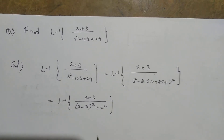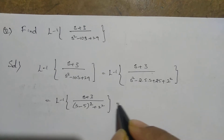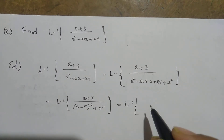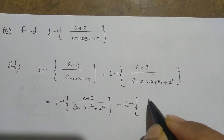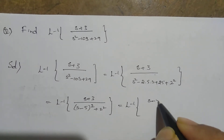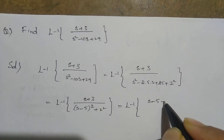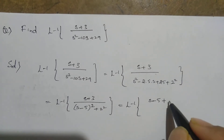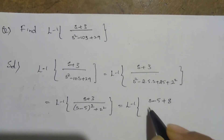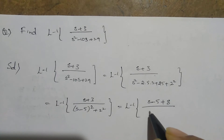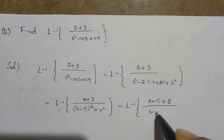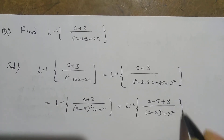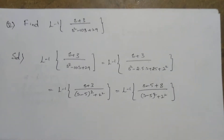So here s plus 3 is there, and here s minus 5 is there. So you can modify the numerator also. I can write s minus 5 plus 5 — we are subtracting, so you get 8 — over (s minus 5) whole squared plus 2 squared.